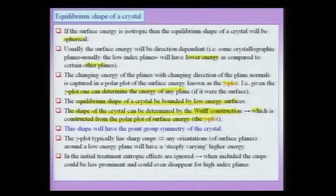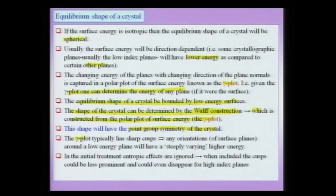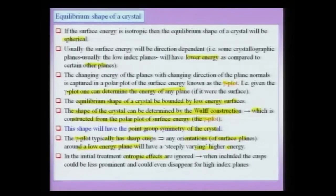Having the gamma plot, we can use the Wulff construction to determine the equilibrium shape of the crystal. An important thing about this equilibrium shape is that it will have the point group symmetry of the crystal. The whole mathematical concept of point groups — derived purely mathematically — converges with real crystals when you actually start talking about the external equilibrium shape, which will correspond to the point group symmetry of the crystal. An important point about gamma plots is that they typically have sharp cusps, and any orientation around a low-energy plane will steeply vary to higher energy. This means the crystal will try to expose those planes which correspond to these cusp directions.